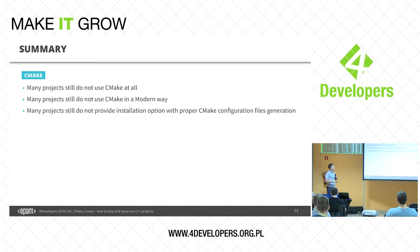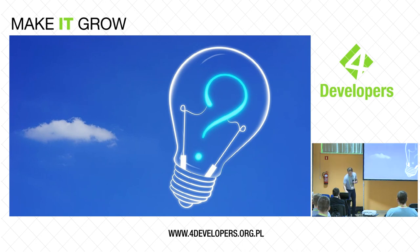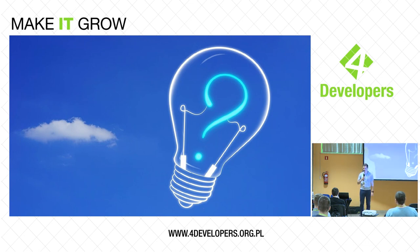As a summary: CMake is already popular, but many projects don't use it at all, or use it the wrong way — not in the modern style — or even if they use the modern style, they skip the installation step, which is really important. Conan is already production quality, many companies use it, it's free with MIT license, servers are available for free right now, and it's quite easy to use with great documentation. Give it a try. Thank you very much. We don't have much time for questions — please ask me during the break.